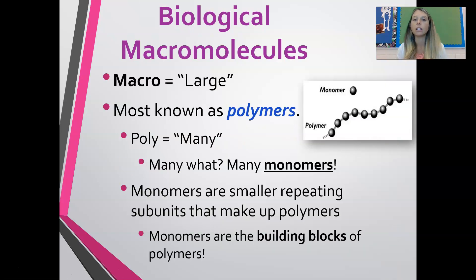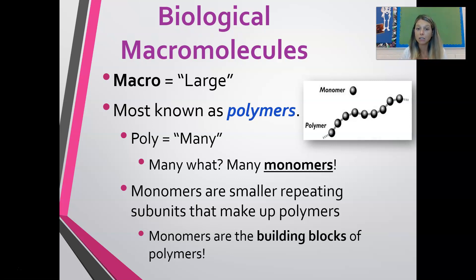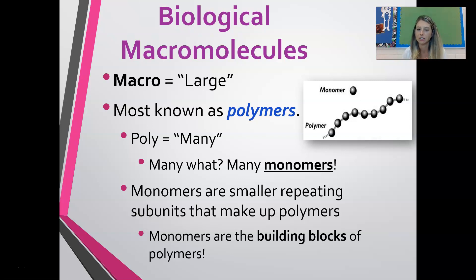The word macromolecule literally means large molecule — a molecule that is very large. Most macromolecules can also be referred to as polymers. Poly means many, so if a macromolecule is many of something, what is it many of? It's many monomers. Mono means one — a monomer is a single subunit that gets repeated over and over to make a polymer. Monomers are the building blocks of polymers.